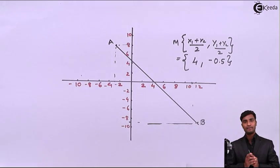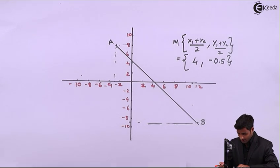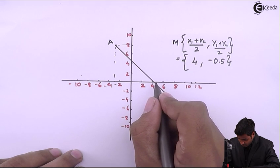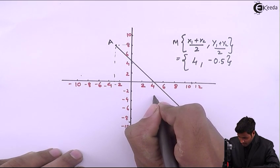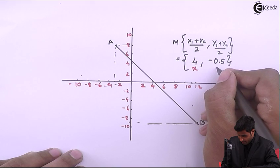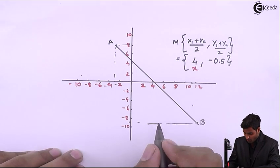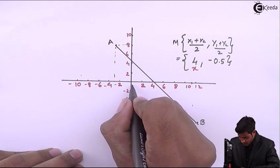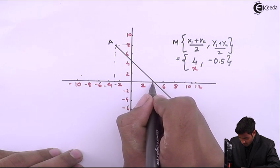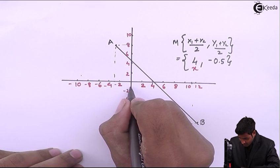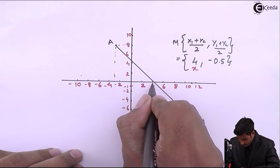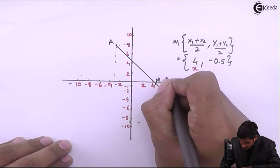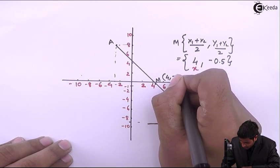The x-coordinate of M is 4, so I will plot it here, and the y-coordinate is -0.5, so it will come somewhere here — meaning M is at (4, -0.5) on the graph.